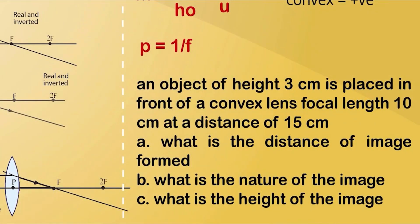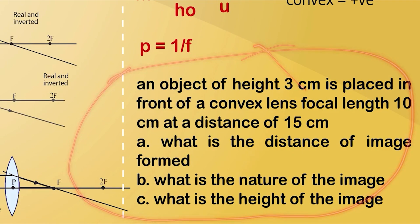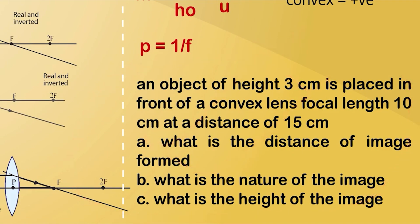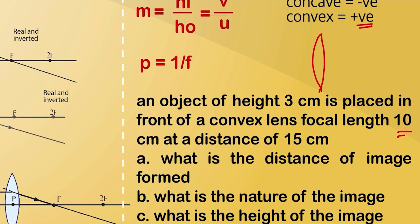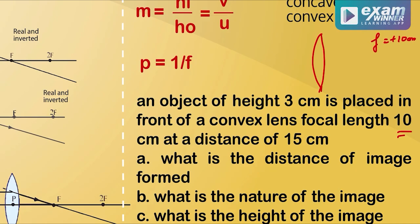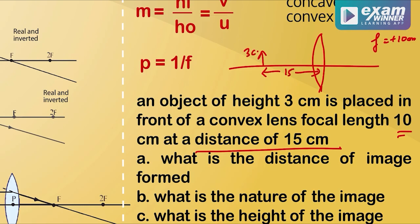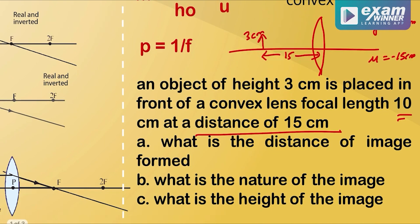For example, we have an object of height 3 cm placed in front of a convex lens with focal length 10 cm, at a distance of 15 cm from the lens. The object distance u is equal to minus 15 cm, because the object is on the left side, so the distance is negative by sign convention.